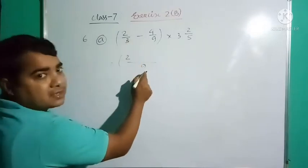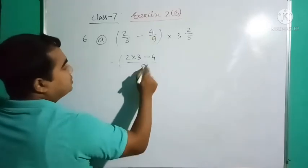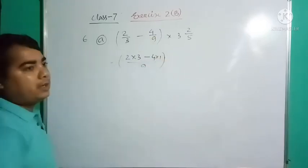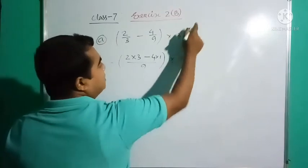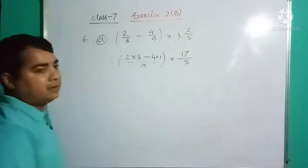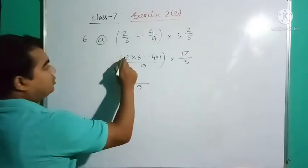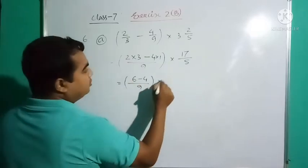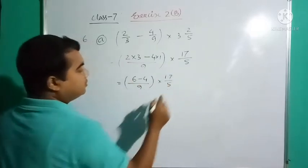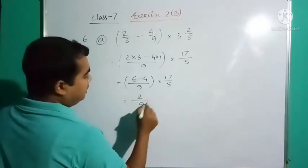See, 3 and 9, LCM is 9. So 2 into 3, how many times? 3 times 3 is 9. So 3 times 2 is 6. Next minus 4, 9 times 1 is 9. And outside, write as 5/17. 3 times 5 is 15 plus 2 is 17. Next line.